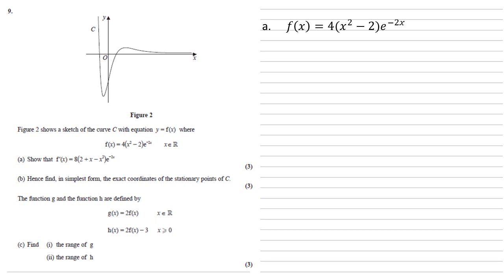Let's differentiate both of those separate functions. Differentiating 4 lots of x squared minus 2, well this is the same as differentiating 4 x squared minus 8. The 4 x squared becomes 8x, the 8 disappears. So we're just left with that 8x.